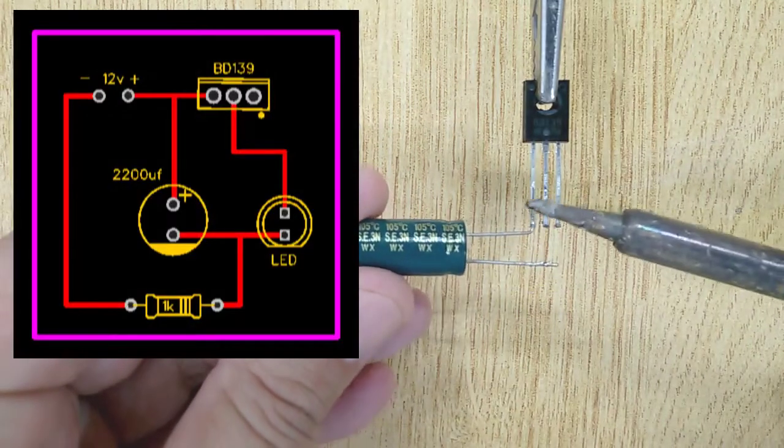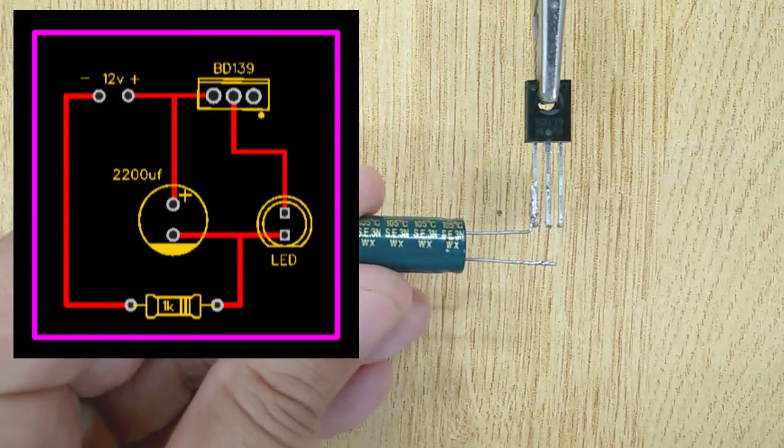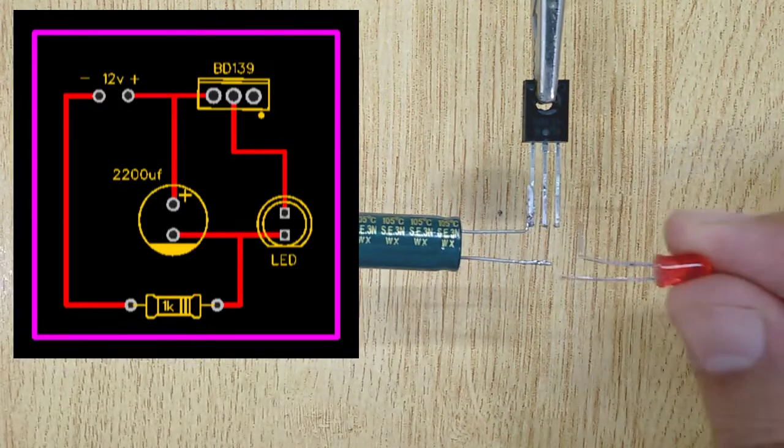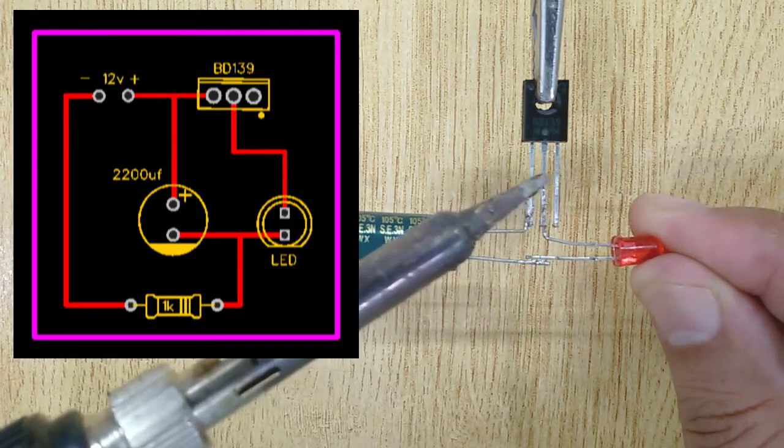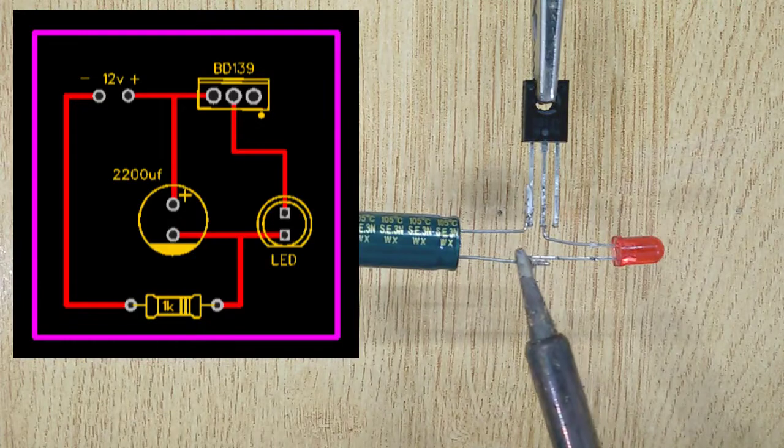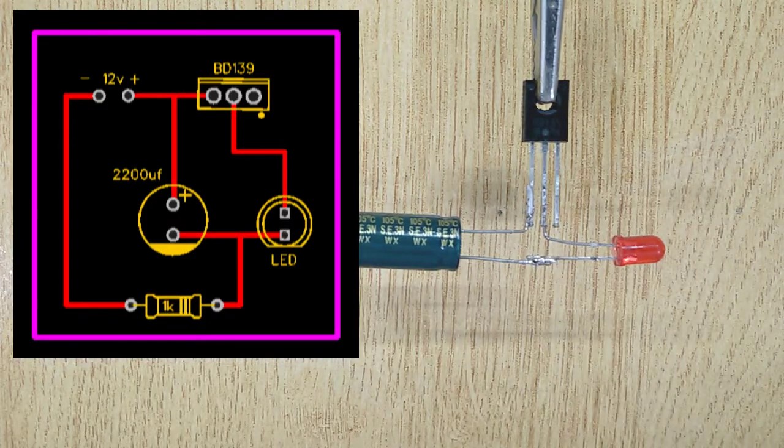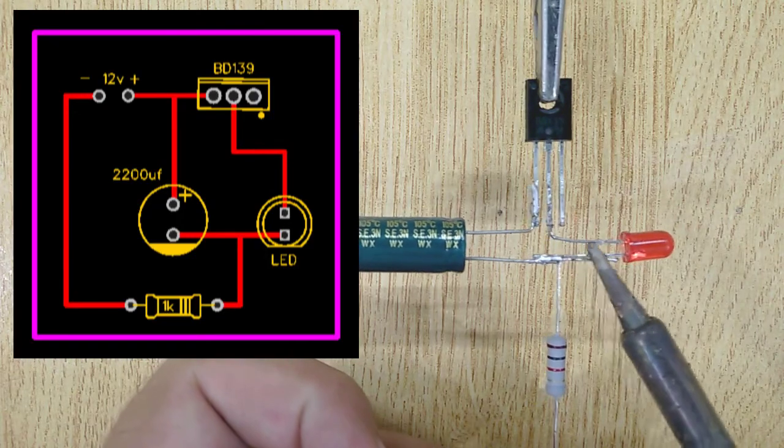First solder the positive pin of capacitor with the emitter of transistor BD139. And then solder the positive pin of LED with the collector of transistor BD139. And after that solder both negative pins of LED and capacitor to each other. And at last solder 1K resistor with the negative pin of LED.